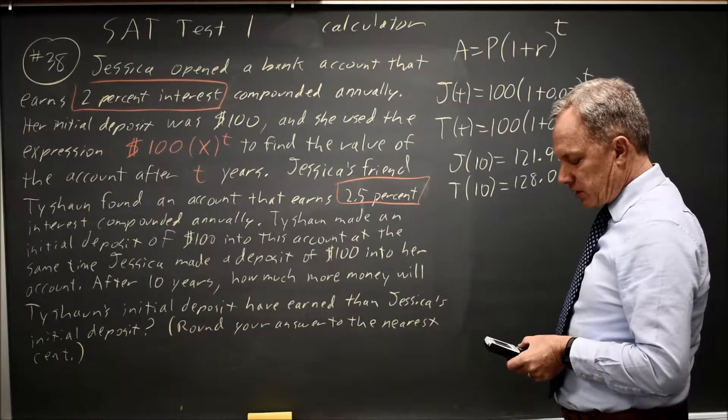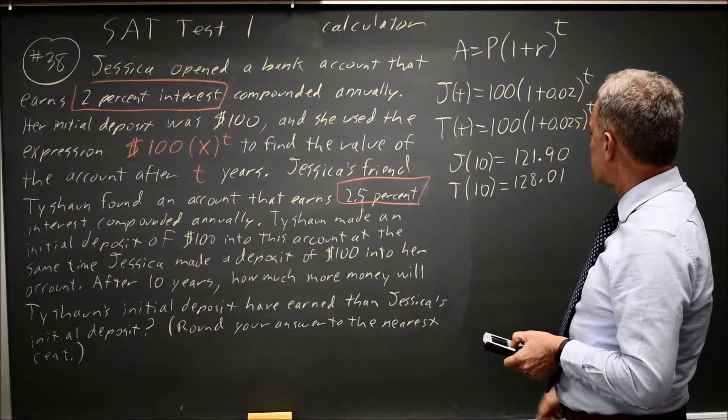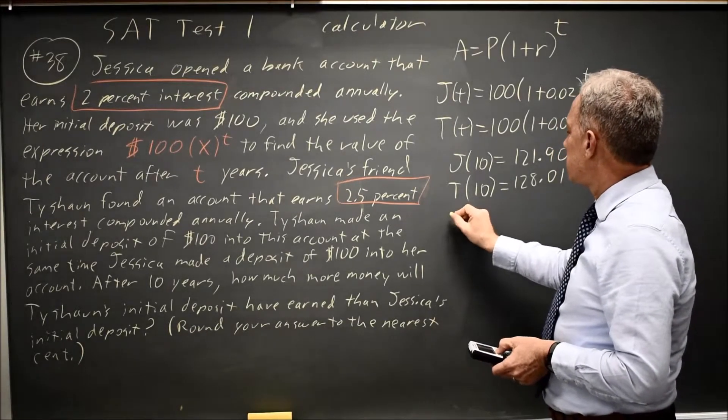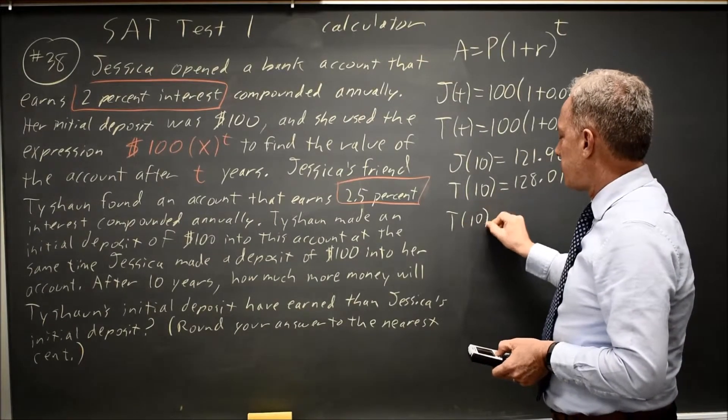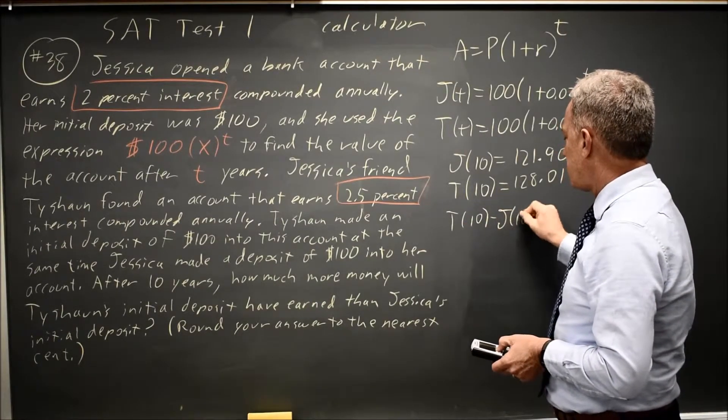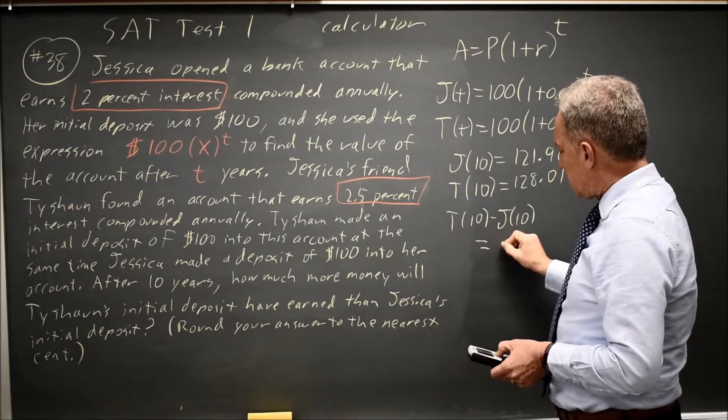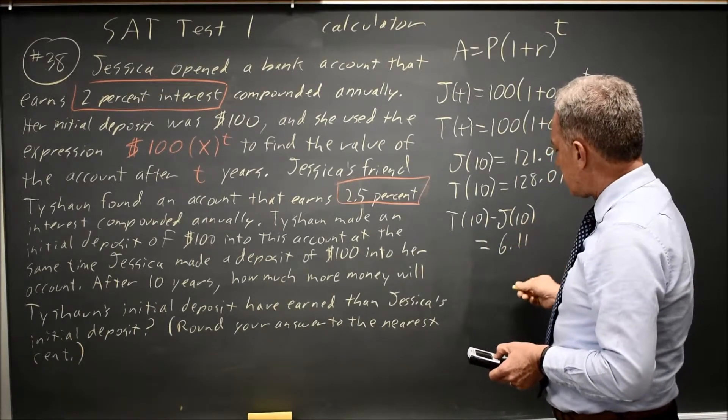If I subtract, I get T(10) - J(10) = $6.11.